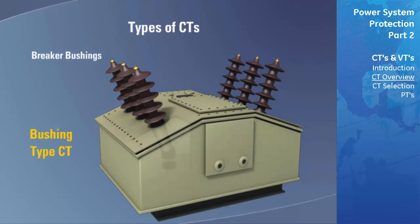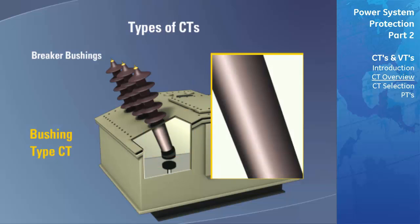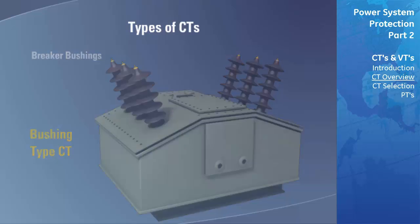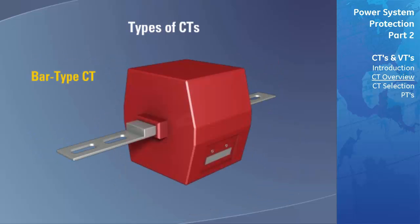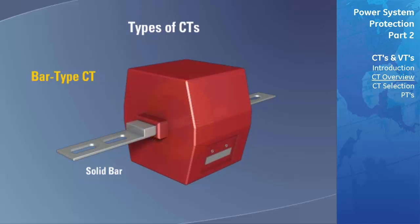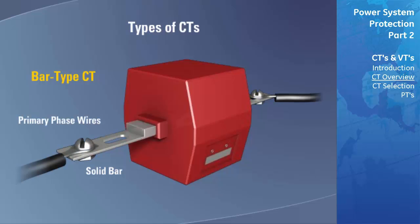A bushing type CT refers to a CT that is built into another power system device, such as a breaker. Terminals are provided on these devices to permit connecting the CT to a relay. A bar type CT has a solid bar that passes through the annular core to form the primary winding of the CT. The primary phase wires of the power system are then connected directly to these bars to complete the connections.